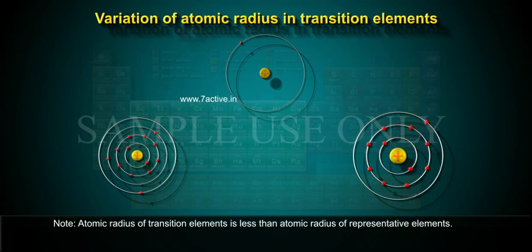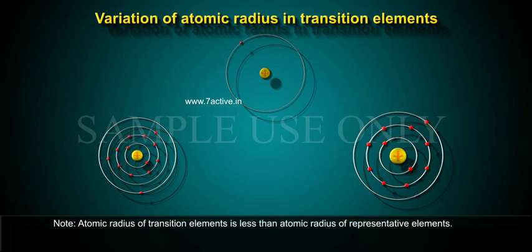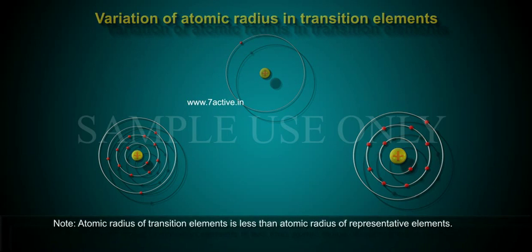Note: Atomic radius of transition elements is less than atomic radius of representative elements.